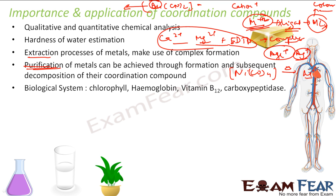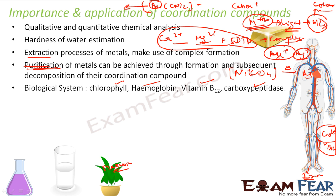In the biological system, coordination compounds are of huge importance. Chlorophyll, the basic molecule for plant survival, contains magnesium. Hemoglobin in the blood contains iron and is used to carry oxygen. Vitamin B12, which contains cobalt, prevents anemia and is a coordination complex of cobalt. Enzymes such as carboxypeptidase are also coordination complexes. These — chlorophyll, hemoglobin, vitamin B12, and many enzymes — have huge importance in our day-to-day life.